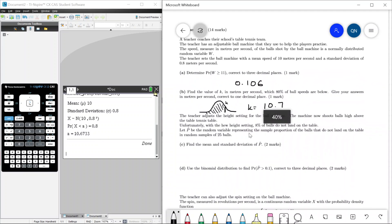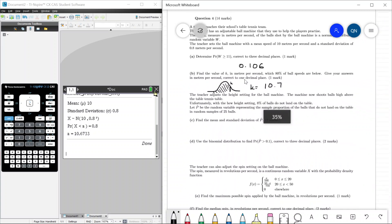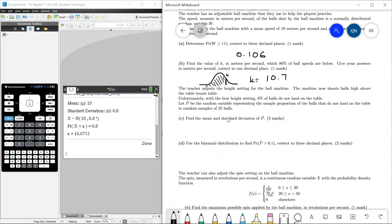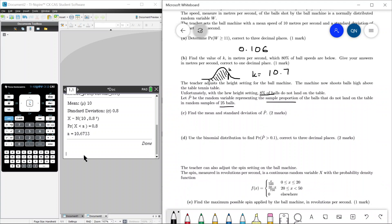The teacher adjusts the height setting for the ball machine. The machine now shoots balls high above the table tennis. Unfortunately, with the new height, 8% of the balls do not land on the table. So we have some kind of probability of success. We'll define the success as being ball does not land on the table. P hat is the random variable representing the sample proportion of balls that do not land on the table in random samples of 25 balls. We can assume this is a large population because this ball machine will just be constantly firing balls.